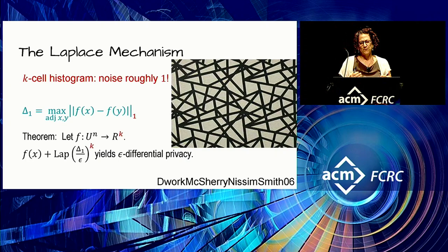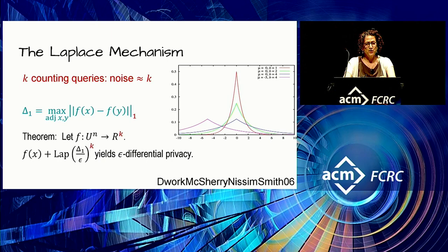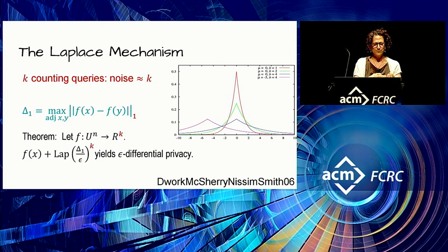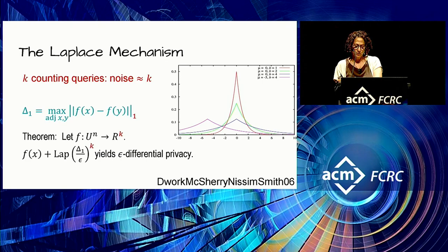This captures contingency tables, which are the workhorse of official statistics — making this an extremely powerful tool. For k arbitrary counting queries, sensitivity could be higher. For example, if we ask how many people speak French, Italian, and German, and one person speaks all three, the sensitivity of that triple of queries together would be three, not one. In the worst case, we would have to add noise on the order of k to each.